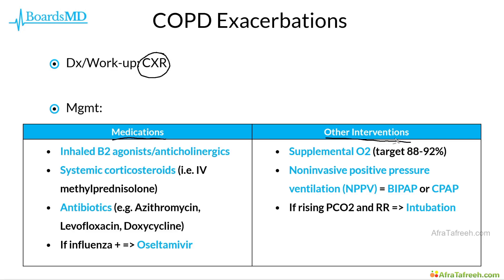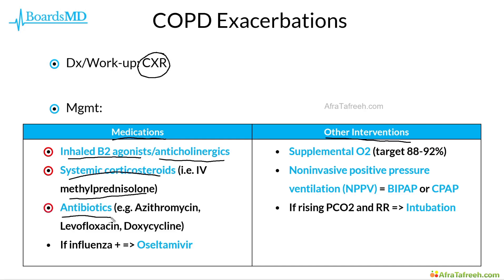In terms of medications, we can help our patients with the use of inhaled beta-2 agonists as well as anticholinergics. Patients with COPD exacerbations often will need systemic corticosteroids, for example IV methylprednisolone, and we can ultimately taper this over time to oral steroids. In select cases we will give antibiotics, including azithromycin, levofloxacin, and doxycycline, depending on whether we need anti-pseudomonal coverage. Additionally, if the patient is influenza-positive, we can also treat with oseltamivir.